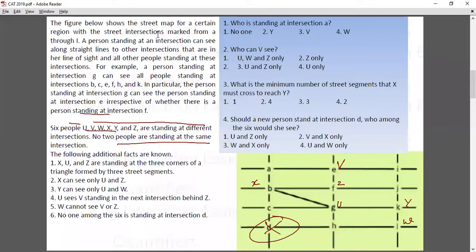So the first question says: who is standing at intersection A? There is no one we can see. We can see Z and U, so only U and Z. This is the third option.